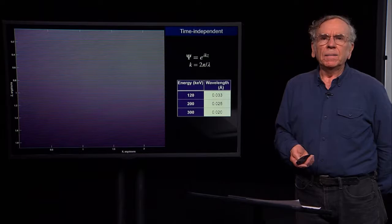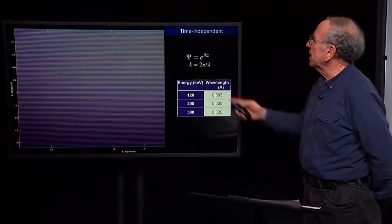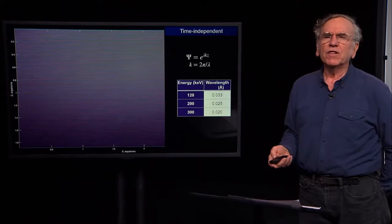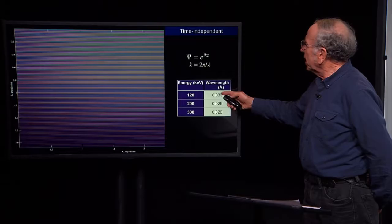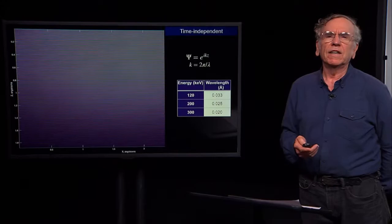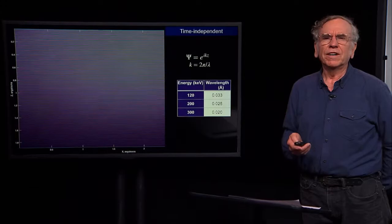For our purposes, we don't need to watch the propagation of the electron. The electron wave function I'm going to use today is time independent — it's e to the ikz. k is a constant called the propagation constant, like one over the wavelength. It shows how fast the phase changes as you move in the z direction. The electron wavelengths are really quite small. The three most popular voltages for cryo-EM microscopes are 120, 200, and 300 kV. We'll be talking about 300 kV electrons today, which have about a 1/50th of an angstrom wavelength.